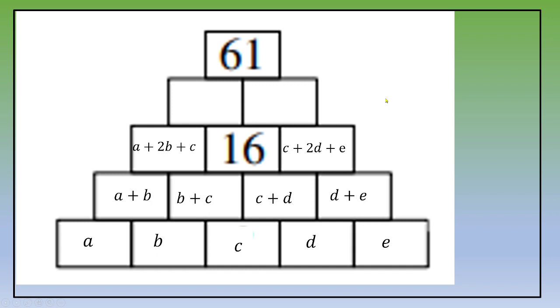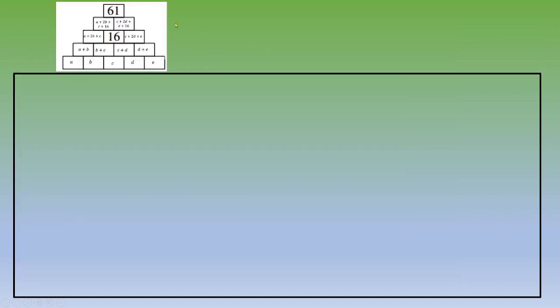And then if we focus on row number two, this is a plus 2b plus c plus 16, and c plus 2d plus e plus 16. Now, the next step is to transform this into equations.